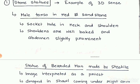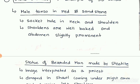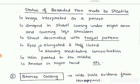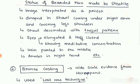When we see the image of the male torso, we can clearly see the socket holes in the neck and shoulder — these socket holes were kept for fitting the arm and head onto the statue. The shoulders were well built and the abdomen slightly prominent. When we study the statue of the bearded man, this statue in various forms has been found in different locations, suggesting it may be a statue of a priest. The statue is draped in a shawl coming under the right arm and covering the left shoulder, decorated with trefoil patterns. The eyes of the statue are elongated and half closed, showing meditative concentration. The hair is parted in the middle and an armlet is also seen on the right hand.